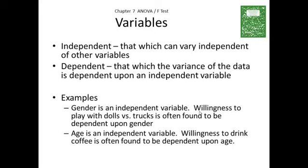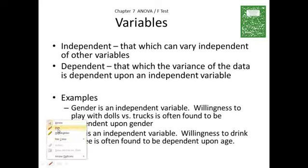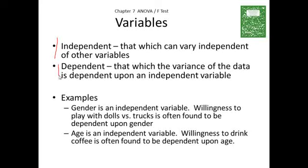We'll begin with the issue of variables. We classify variables as one of two types: they can either be independent variables or they can be dependent variables. Independent variables are variables which can vary independently of other variables. Dependent variables are variables which vary dependent upon some other variable — the independent variable.